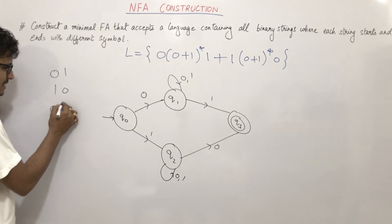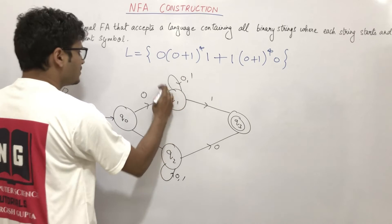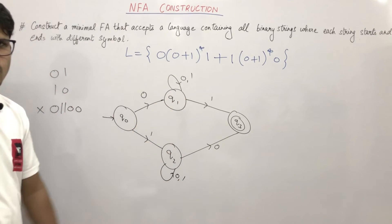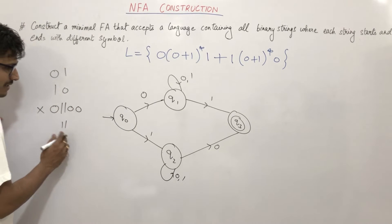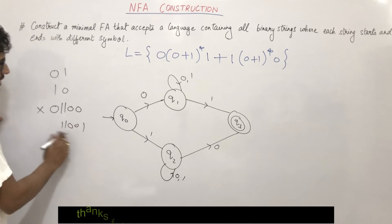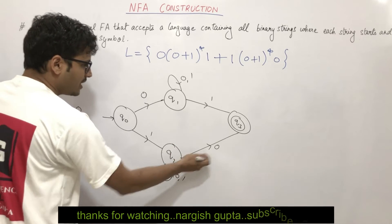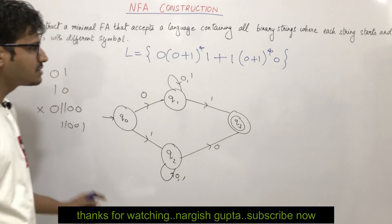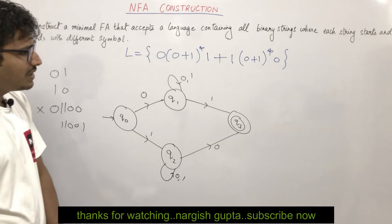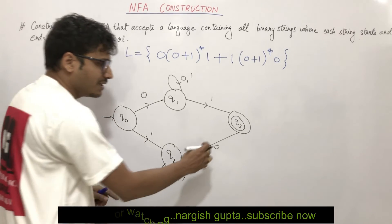Now if I say that it should start and end with the same symbol, then it should not be accepted. For example, 0110 - it will stay in a non-final state q1 and will not reach the final state q3.